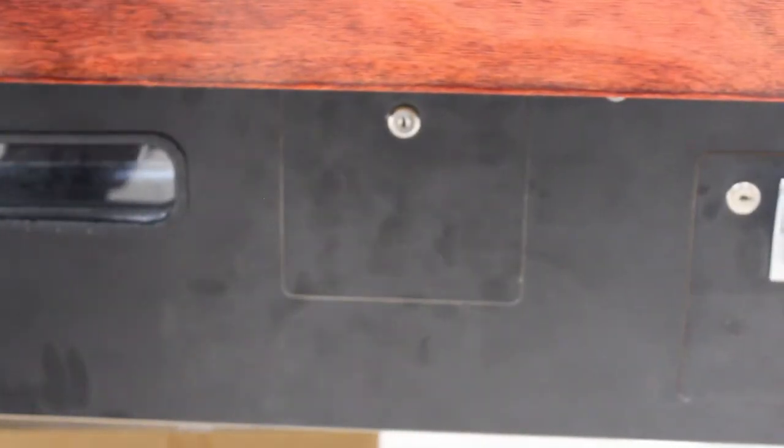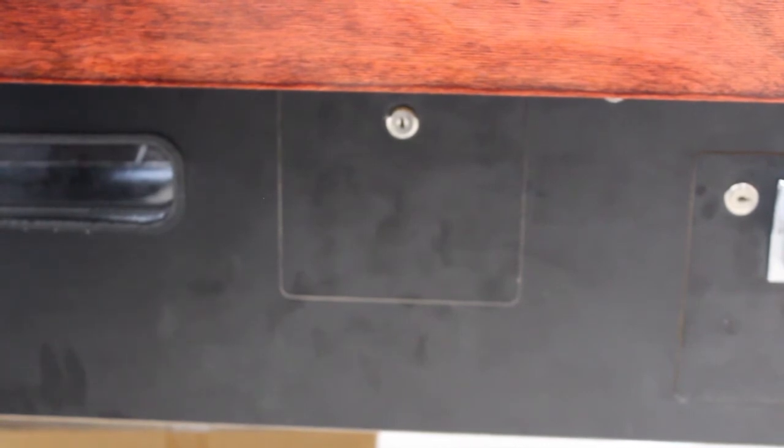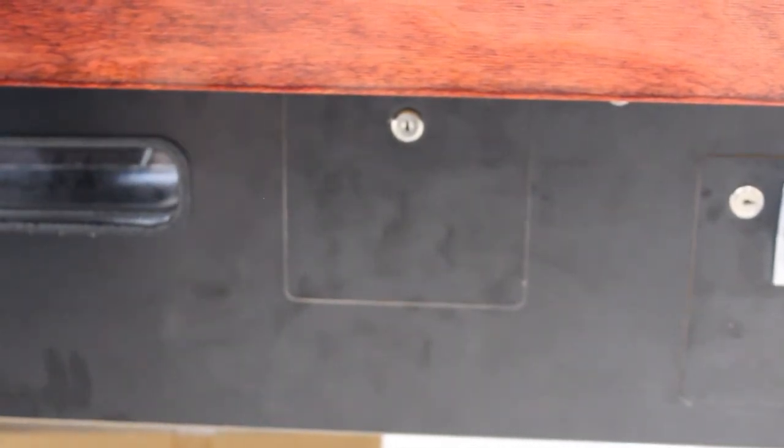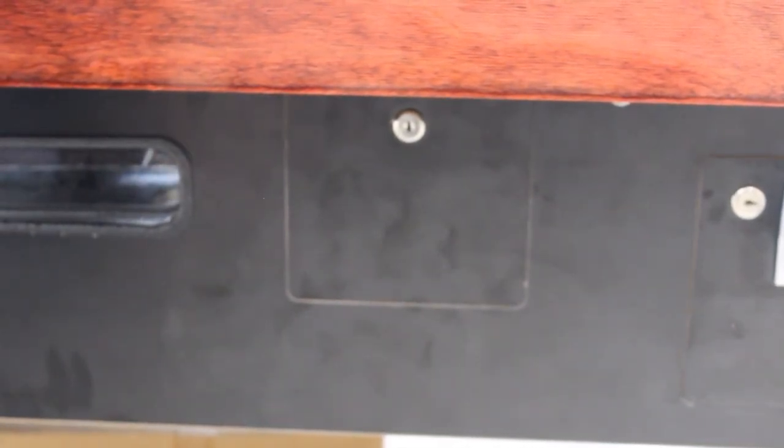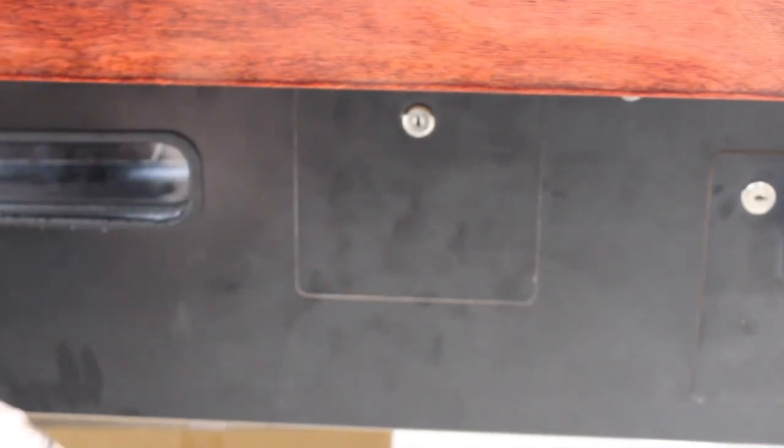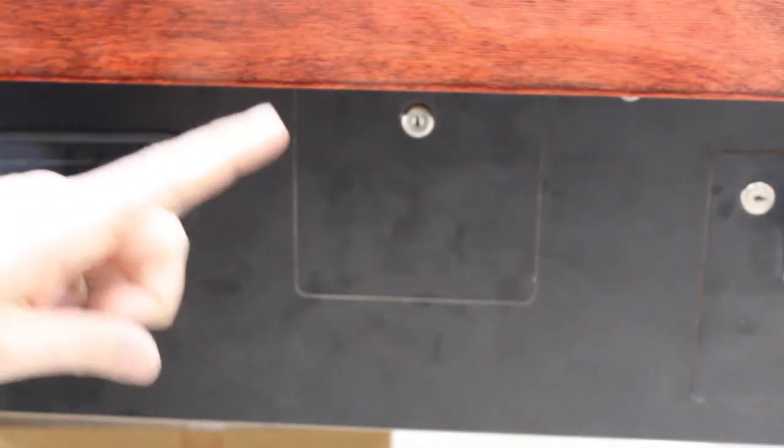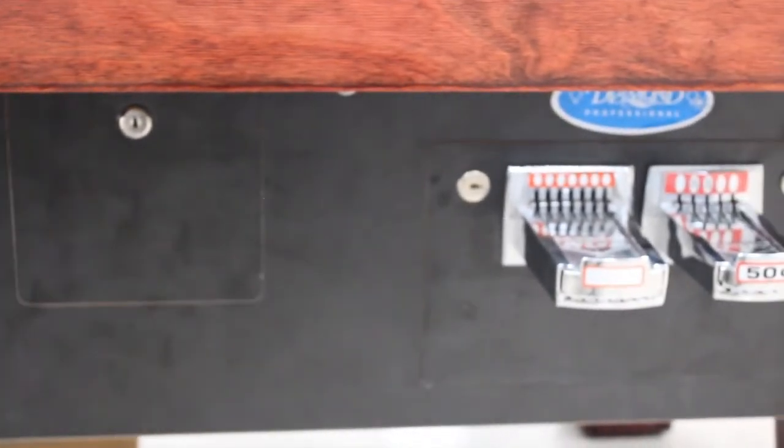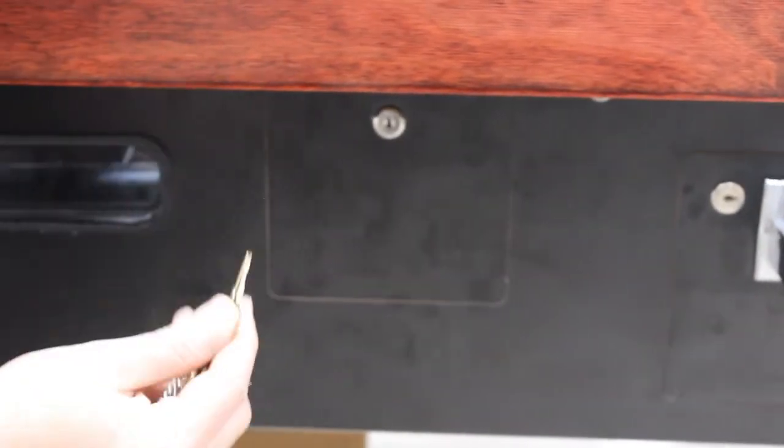Okay, now we're going to look at how to access the cue ball sensor from the outside of the table. So if you need to make an adjustment, you'll come to the front of the table and there is an access door to the left of the coin mech door. It will be a small square one. You'll need an access key. In this case, it's 502.